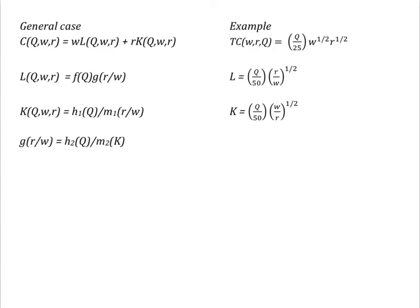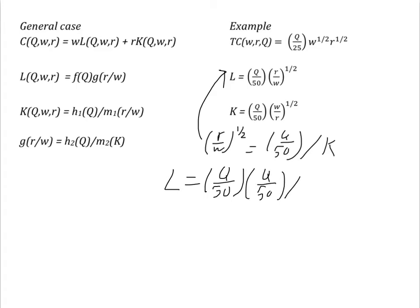Rewrite the second equation so that it is a function of the expression for the ratio of input prices from the first equation. That is, R over W to the 1 half is equal to Q over 50 divided by K. Substitute this back into the first equation.